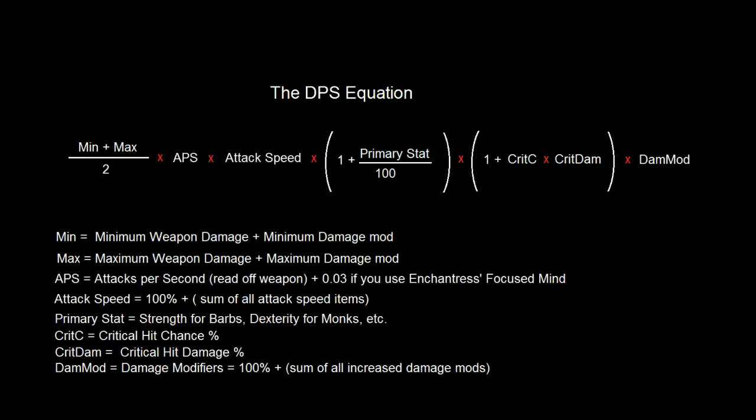Next, we have your primary stat. It's going to be Strength for Barbs, Dexterity for a Monk and Demon Hunter, and so forth. So you get that number, divide by 100, and then add 1. So you multiply that in.